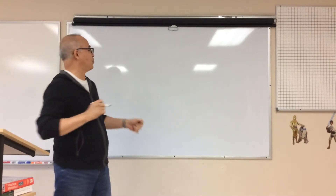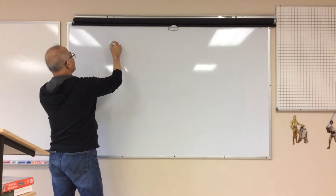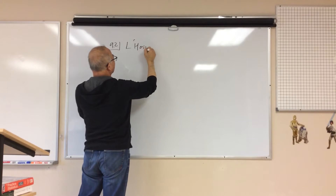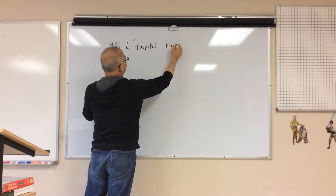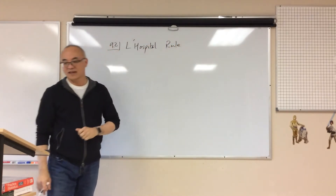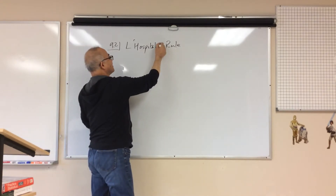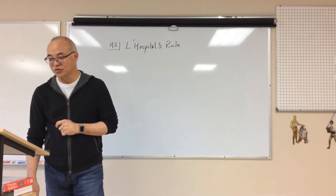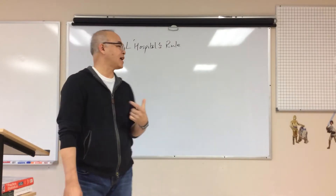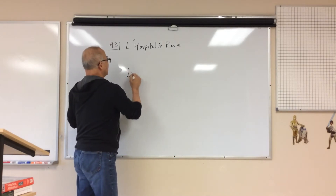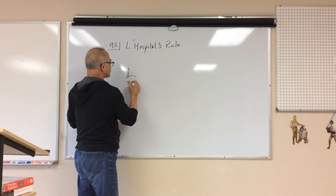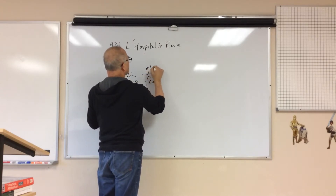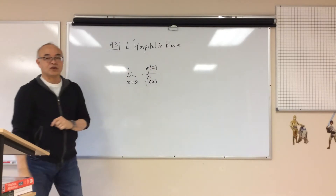We're going to talk about section 9.2 and L'Hopital's rule. L'Hopital's rule tells us how to figure out limits when we have something that looks like the limit as x goes to a of f(x) over g(x).